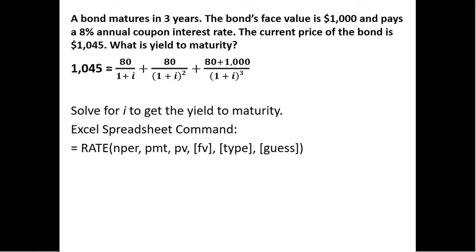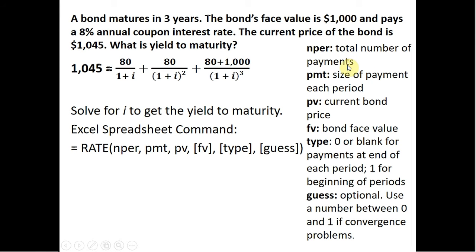Let me explain what these mean. NPER is the total number of payments. In our example, it's going to be three. We've got three years remaining, so we're going to have three more payments coming. Payment is going to be the size of each payment each period. And that's just going to be $80 in this example, the coupon interest payment. PV is going to be the bond's current price, so $1,045. FV is going to be the bond's face value, $1,000. That's what we get back at maturity.